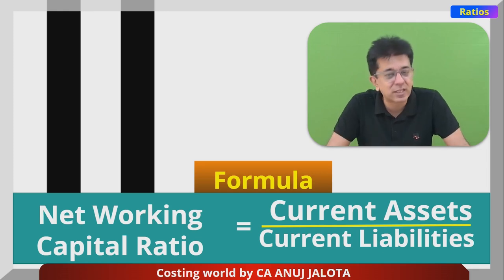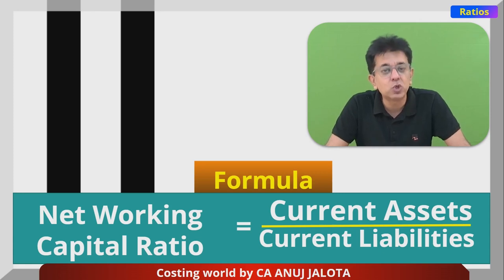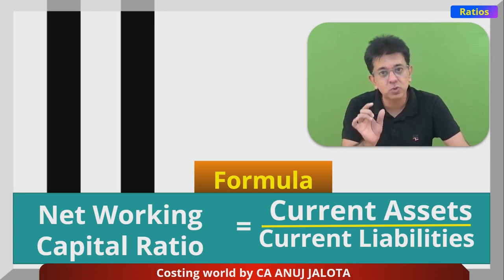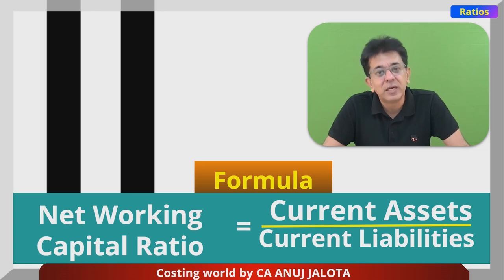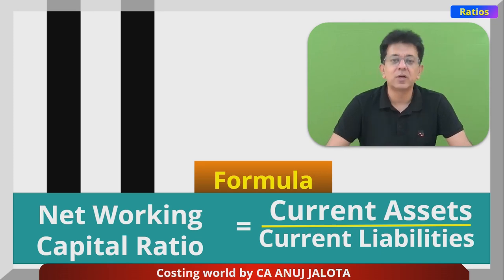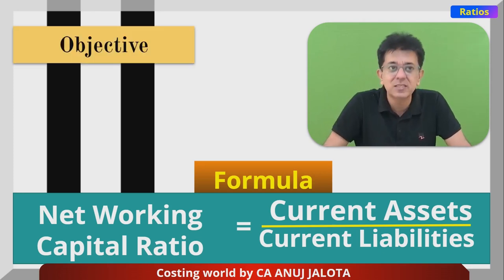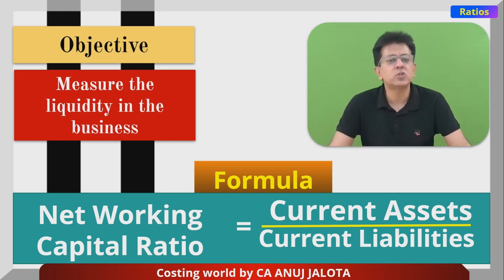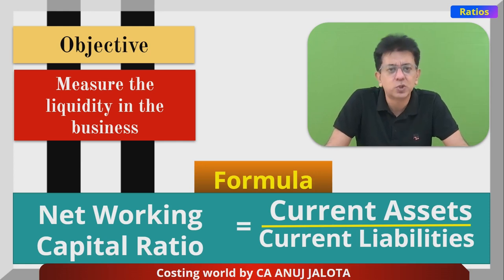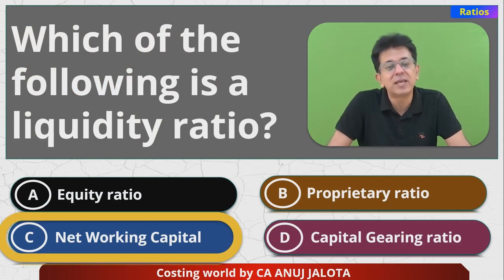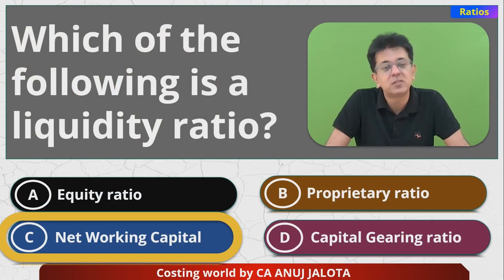If this ratio is less than one, it's a very poor sign. Even when it is 2:1, you should check the composition of current assets to see how much can actually be used to meet current liabilities. A slightly more liquid measure is the Quick Ratio, which is quick assets divided by current liabilities. The objective of all these ratios is to measure liquidity in the business. So the correct answer is C — Net Working Capital Ratio. Thank you, see you next time!